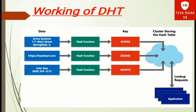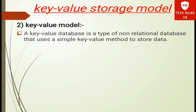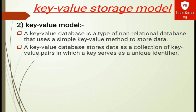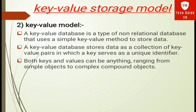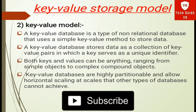The second model is the key-value storage model. A key-value database is a type of non-relational database that uses a simple key-value method to store data. It stores data as a collection of key-value pairs, in which a key serves as a unique identifier. Both keys and values can be anything, ranging from simple objects to complex compound objects. Key-value databases are highly partitionable and allow horizontal scaling at scales that other types of databases cannot achieve.